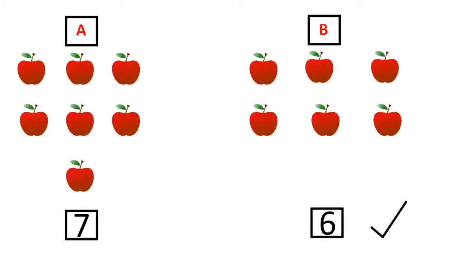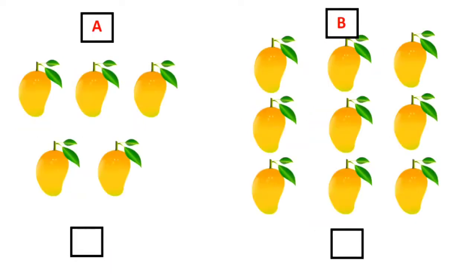Let us see another example. Here you can see 2 sets of mangoes. Let's count how many mangoes are there in set A: 1, 2, 3, 4 and 5. Now let's see how many are there in set B: 1, 2, 3, 4, 5, 6, 7, 8 and...